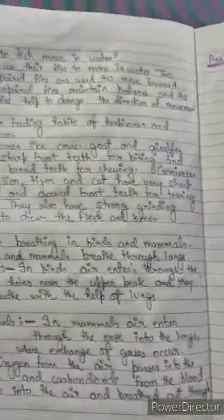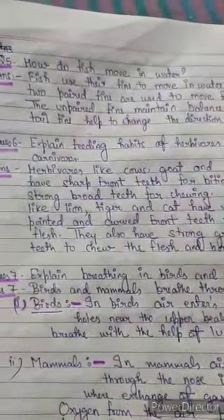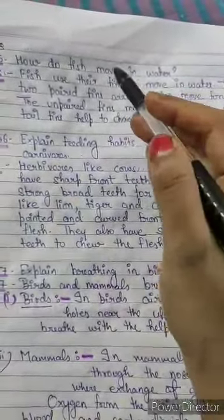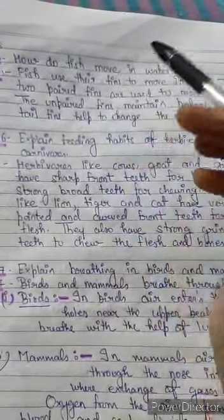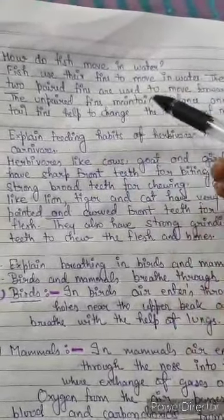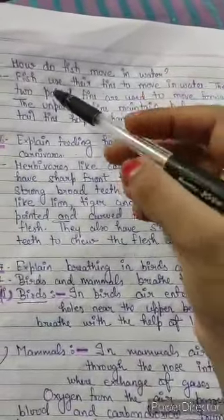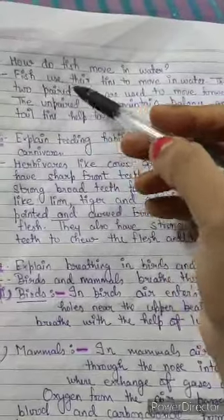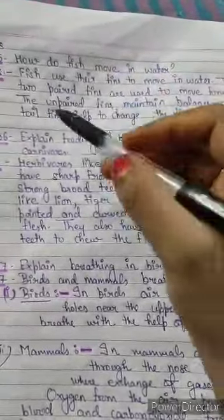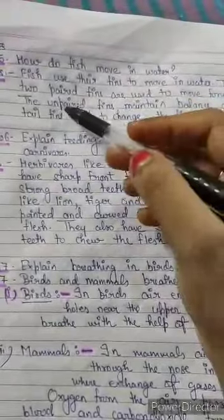Question 5: How do fish move in water? Fish use their fins to move in water. There are paired fins and unpaired fins in a fish's body. The two paired fins are used to move forward. The unpaired fins maintain balance in the water, keeping the fish's body stable.